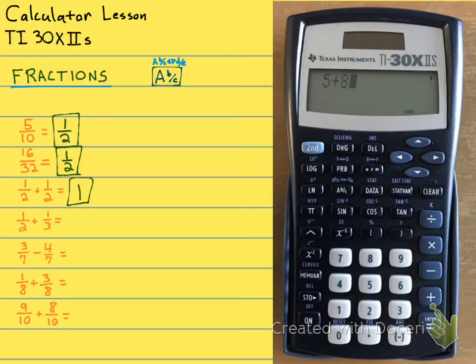Now, it's much more helpful for fractions like this that we don't know just by looking at them what the answer is going to be. 1 half plus 1 third. So why don't you pause the video, plug in 1 half plus 1 third, and see what you get. 1, ABC, 2, plus 1, ABC, 3, equals. And you should get 5 over 6.